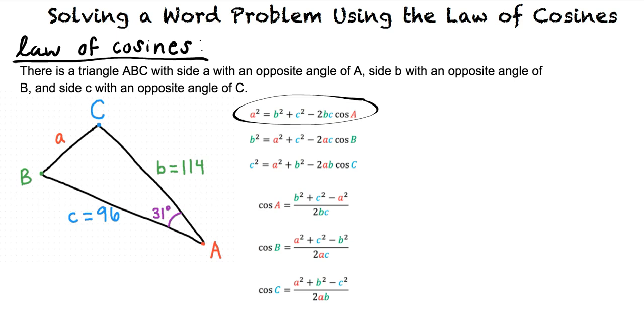How do we solve for side A? First we have to change A squared into A. We can do this by taking the square root of both sides. This leaves us with A is equal to the square root of B squared plus C squared minus 2BC cosine of A. We substitute in B, C and angle A.